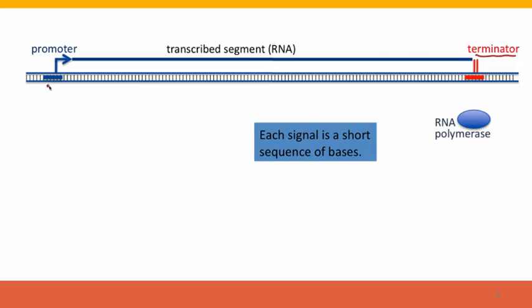So we have two signals, a start here signal and a stop here signal that are recognized by RNA polymerase.